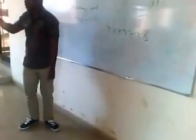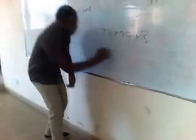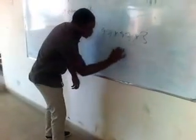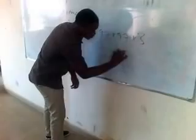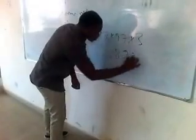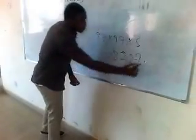97 times 97 times 3. You said 97 times 97 times 3 — please check it. The answer is 28,227.